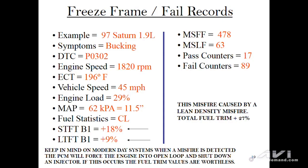On the flip side, let's say a vehicle comes in with the MIL light on and a misfire code — in this case a 1997 Saturn with a P0300. Take a look at the short-term and long-term fuel trim. When you combine both of those together, the total fuel trim is adding 27 percent. That tells you right away it is a lean density misfire, and all the secondary components in the world are not going to correct that problem.